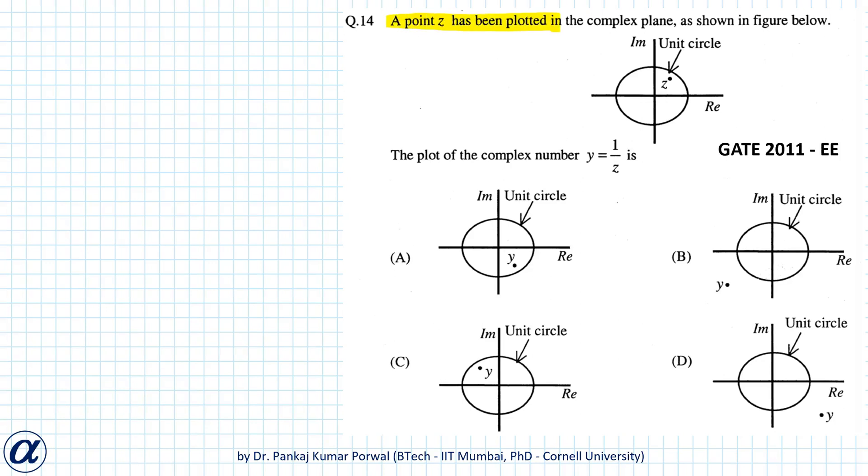In this question, a point z has been plotted in the complex plane. z lies inside a unit circle in the first quadrant. This question will be very easy to solve using the polar form of complex numbers.